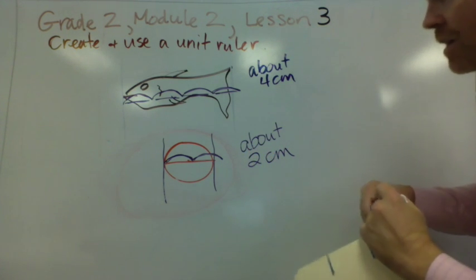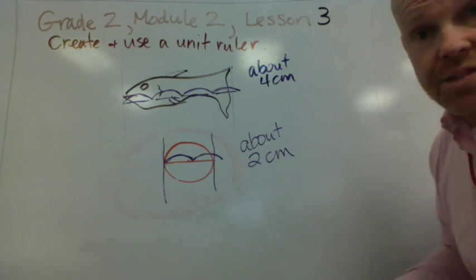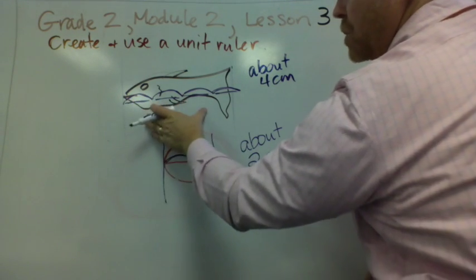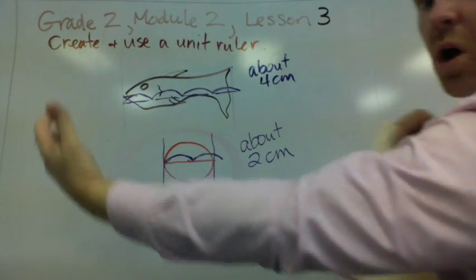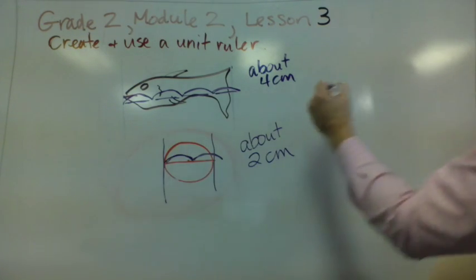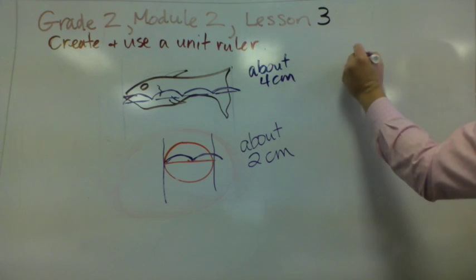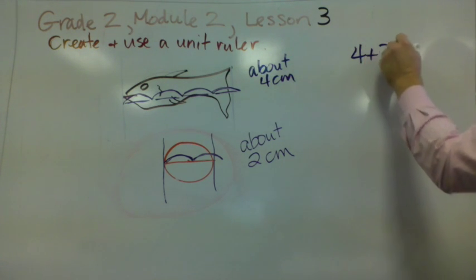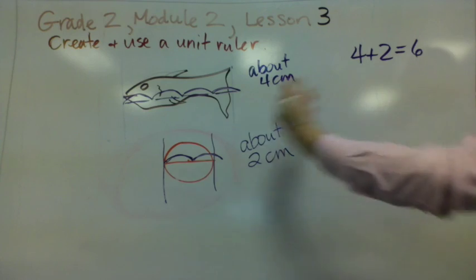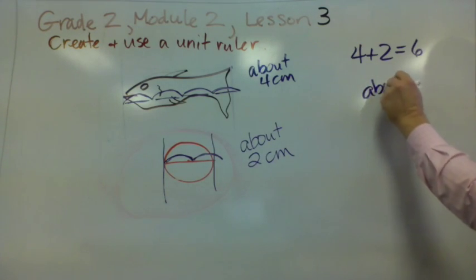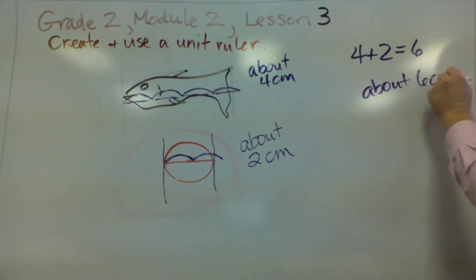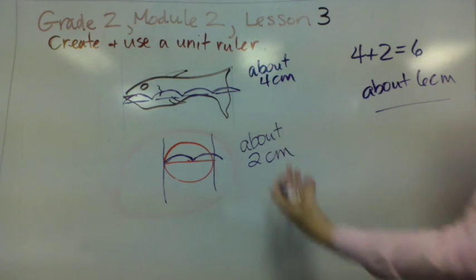Now if we wanted to, we can ask students, well, what if we put the fish and the circle next to each other? How long would it be? We would expect students to say something along the lines of, well, four plus two is six, so we would expect the combined length to be about six centimeters. It's that conservation of length here.